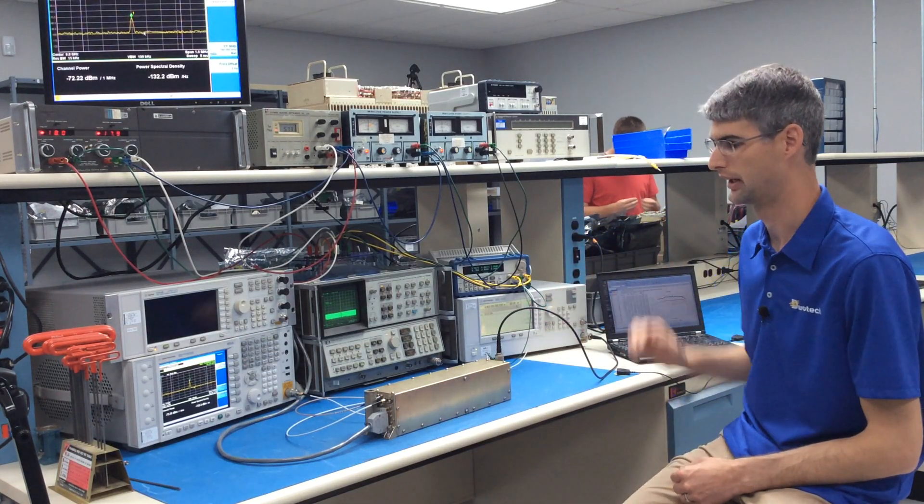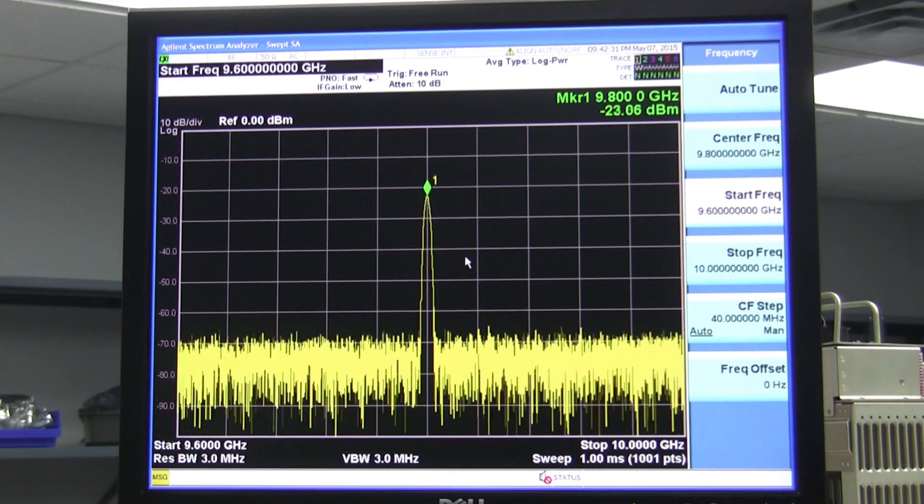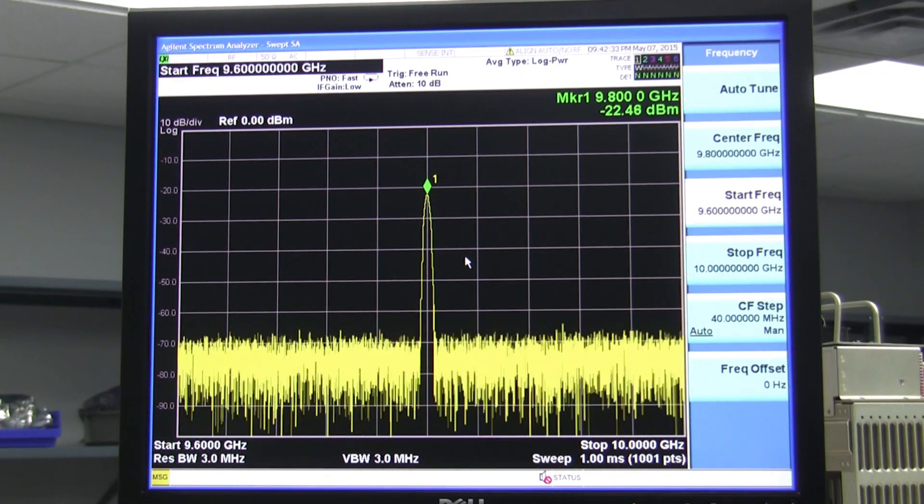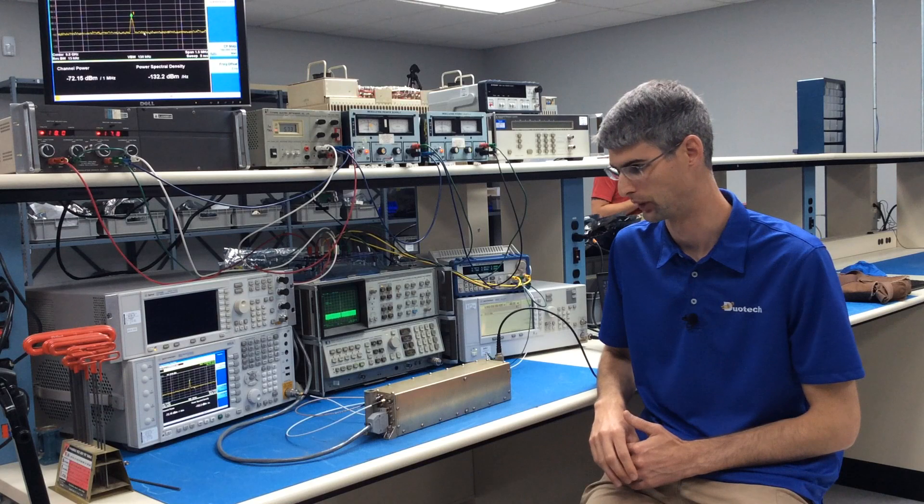By starting here at minus 90 and then bringing that value up, I can see the input range of this particular amplifier and plot those data points.